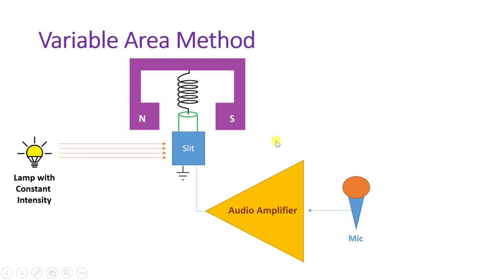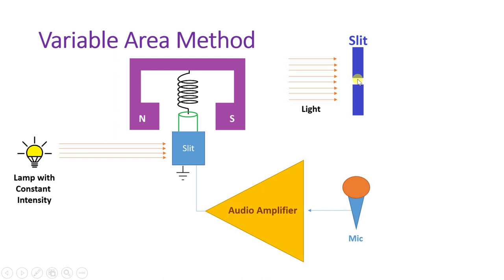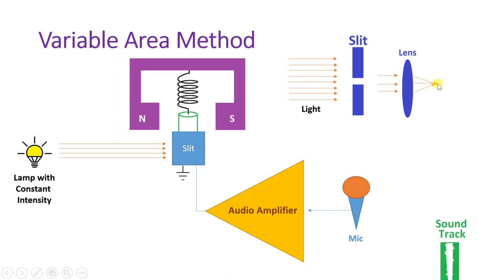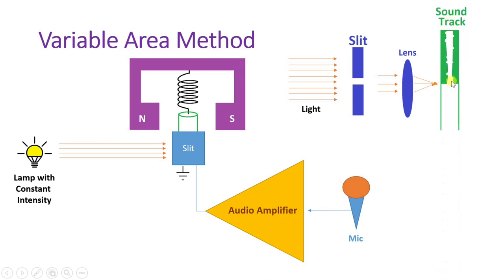The variable slit area changes the light intensity on the output side. That light is then focused by a lens and recorded onto the optical film. Based on the opening of the slit area, the soundtrack is recorded on the film. This is how the variable area method is used to record sound on film.